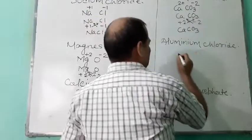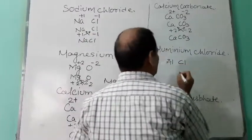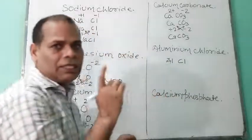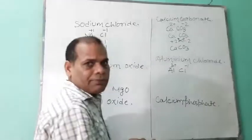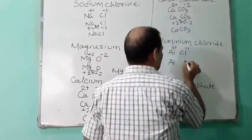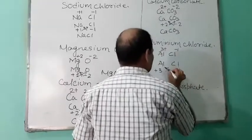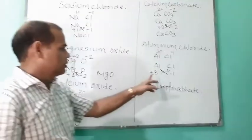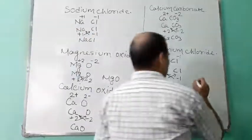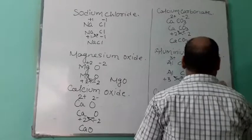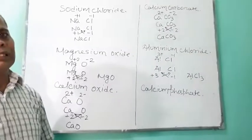Aluminium chloride. Symbol of aluminium is Al; chloride is Cl. Aluminium has valency plus three; chlorine has minus one. Write Al, Cl, plus three, minus one, and cross each other. Three goes to the Cl side, and one goes towards Al. So the formula of aluminium chloride is AlCl3.